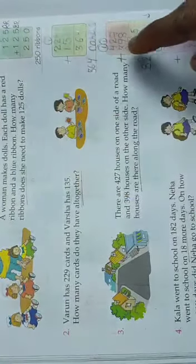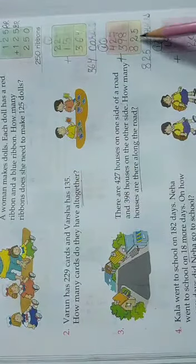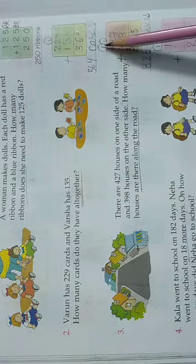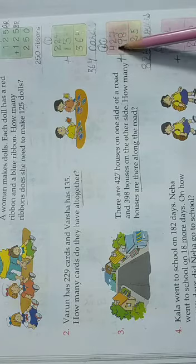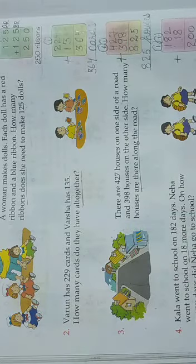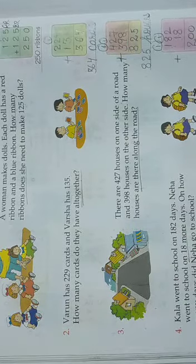2 plus 1, 3. 3 plus 9. Open 9 fingers. After 3, 4, 5, 6, 7, 8, 9, 10, 11, 12. So we're going to write 2 here and 1 will be carried over. Never forget the carry over. We'll add this: 1 plus 4, 5. 5 plus 3, 8. So overall on both sides of the road we have 825 houses.